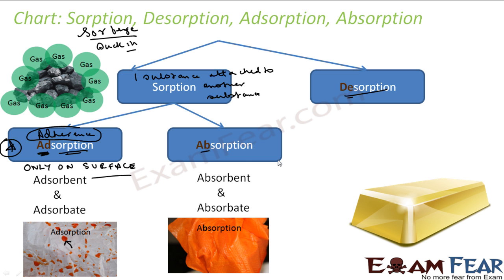In absorption, the prefix 'ab' stands for absolute — meaning the substance is uniformly distributed throughout the bulk, totally sucked in. For example, when you dip chalk in ink, the water molecules of the solvent penetrate deep inside — that is absorption. Similarly, a cold drink gets totally absorbed by tissue paper. In chemistry, calcium chloride anhydrous will absorb water molecules — it actually reacts with the water molecules, totally absorbing them.